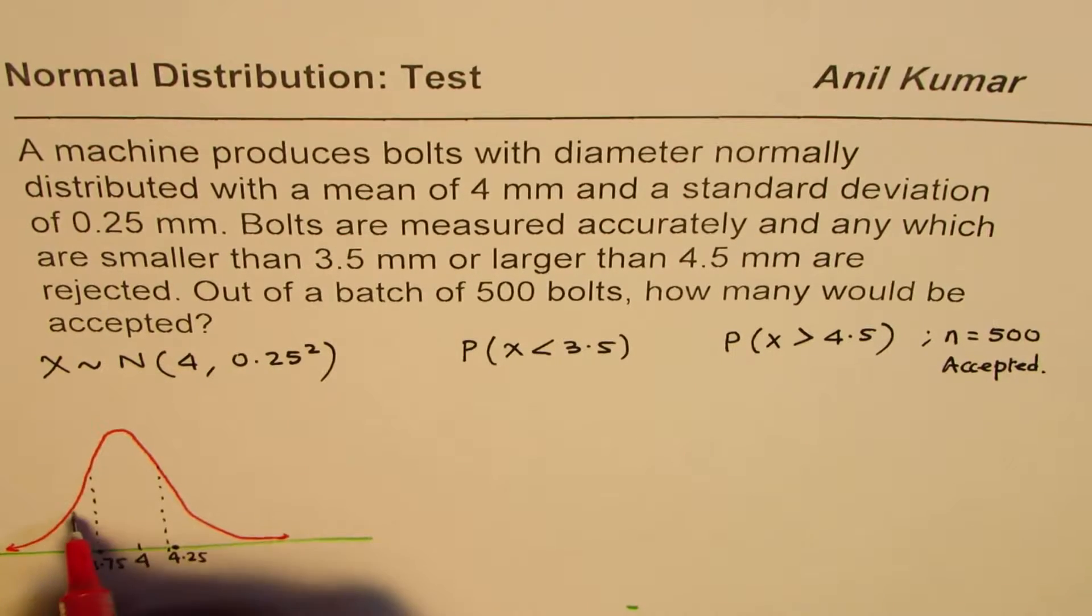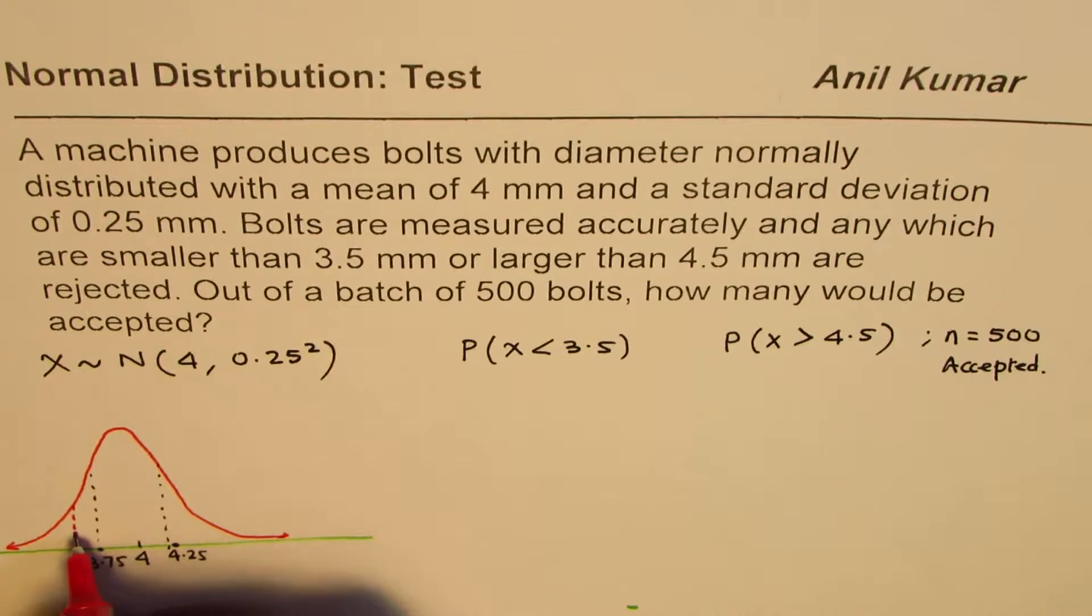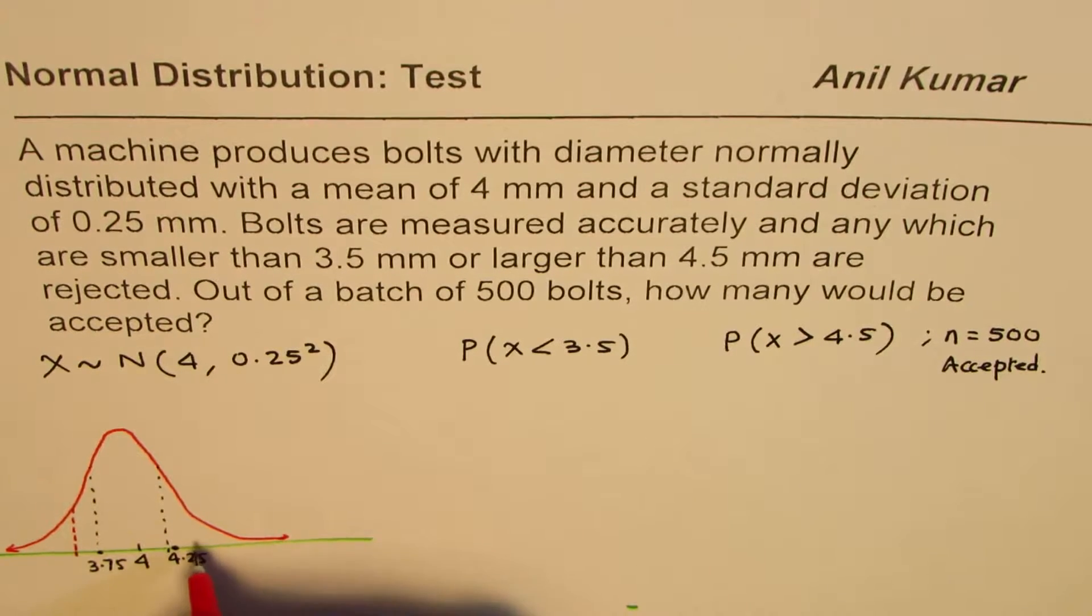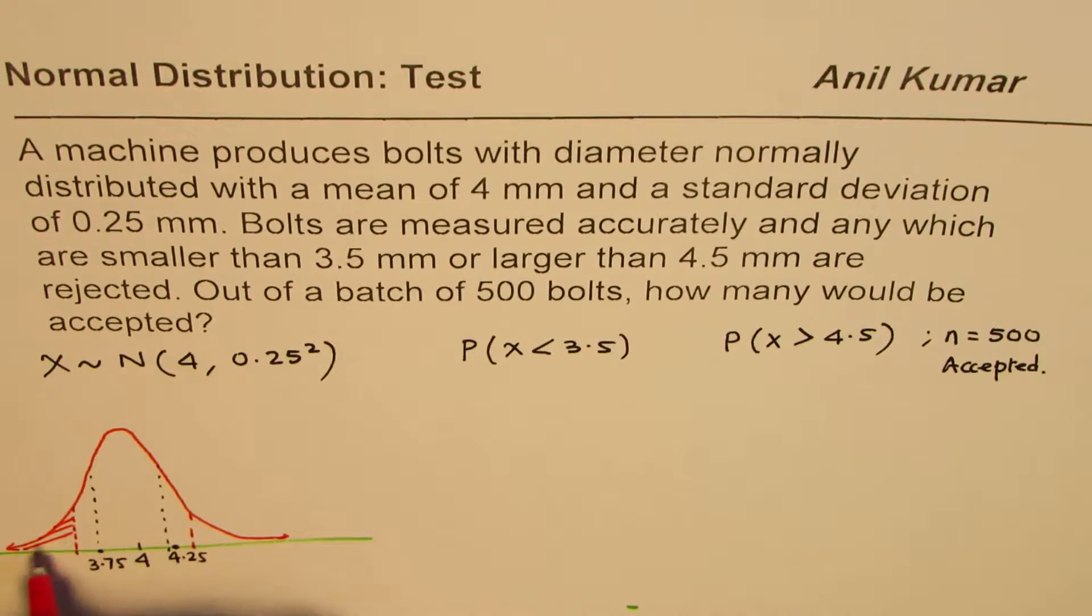Now we are rejecting all those which are on left side of 3.5, so let's say 3.5 is kind of here, and 4.5 is kind of here. So I'll just shade this portion we want to reject.